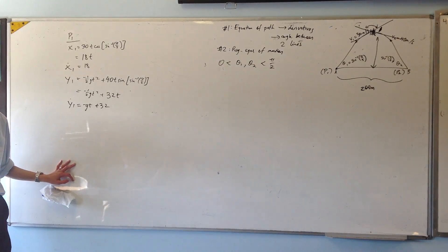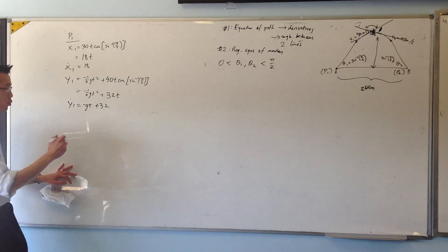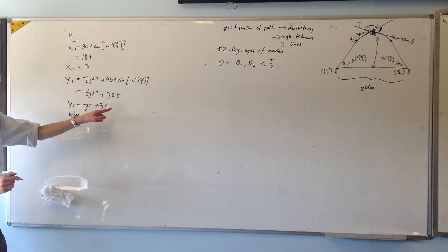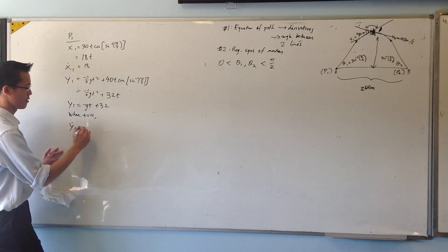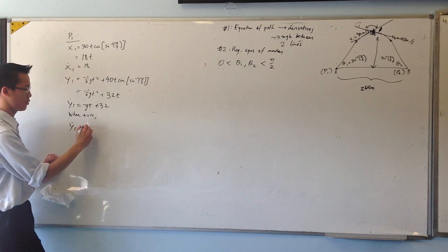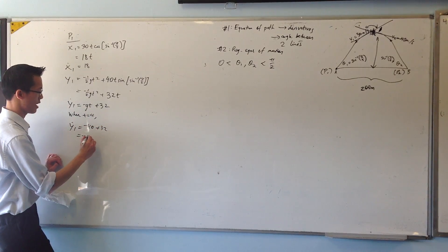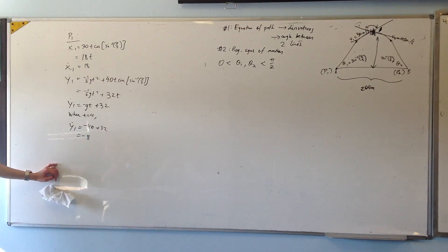Now, what I'm actually interested in is the point of collision, when t equals four. So, this part here is actually going to be, I know what g is, that's 10, so this will be minus 40 plus 32, that's minus eight. Wait, is that what I got before? Sorry, I'm just going to double check the numbers.